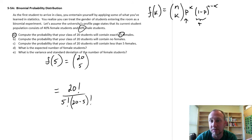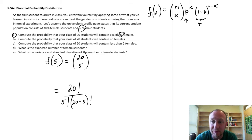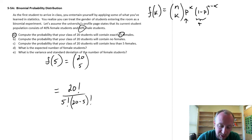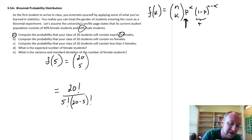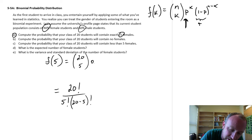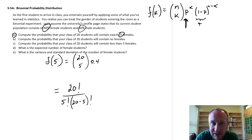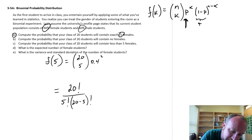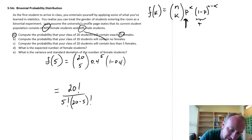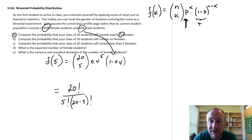That's going to be over 15,000 different ways in which we might achieve that experimental outcome — five females out of 20. Now looking at the probabilities: the probability of a female, a success, is going to be 0.4. And 1 minus 0.4 is 0.6, that's the probability associated with a male student entering the room.